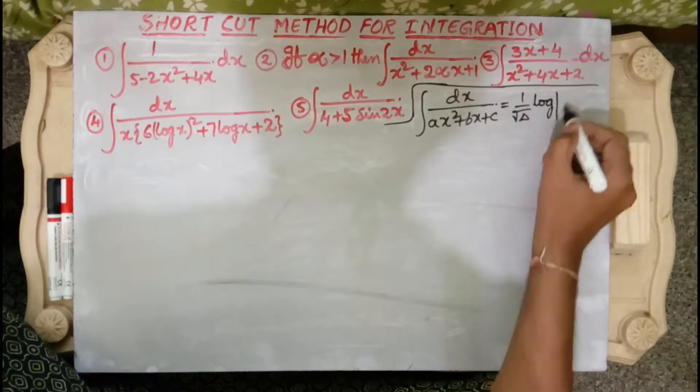In the last video I showed the formula for delta less than 0. Now I will show the delta greater than 0 case and apply this formula. Let us start the first problem.